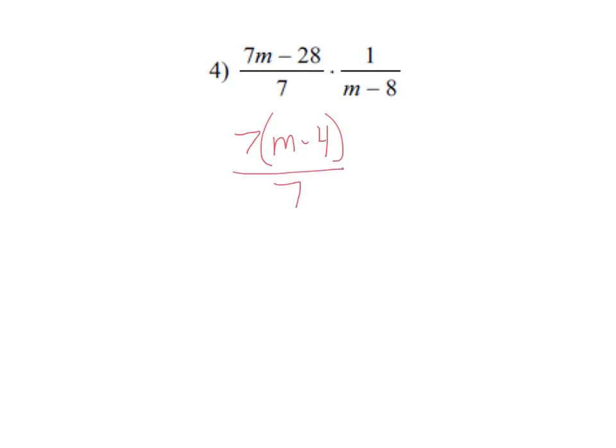Over 7, multiplying 1 over m minus 8. If it helps, put parentheses around that to help remind you that it's a whole quantity, it can only cross off as a whole quantity.